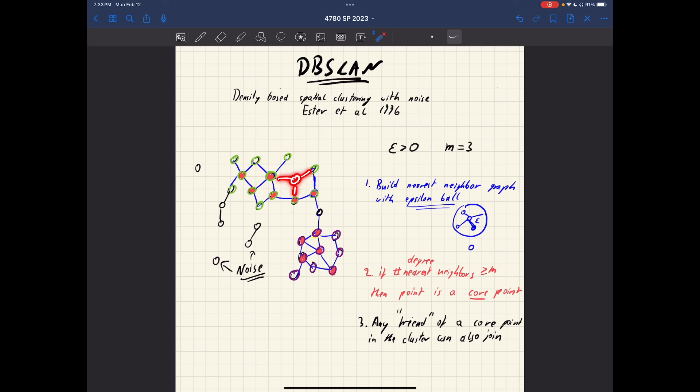This guy has 1, 2, 3 nearest neighbors. 3 is greater than or equal to 3. Yes, it's also a core point. This guy, 1, 2, 3, core point. This guy, 1, 2, 3, core point. This guy has only one nearest neighbor. Not a core point. Not cool enough. This guy, not a core point. Only two nearest neighbors. So, again, you compute this for every single data point and you get all your core points. These are here, these red points.